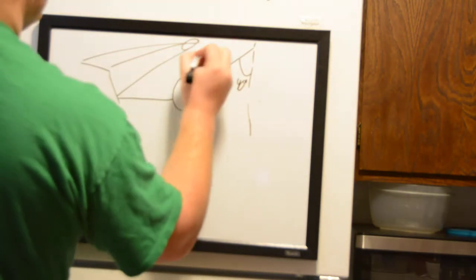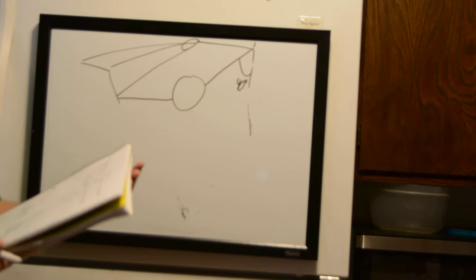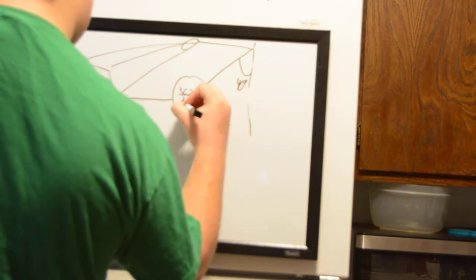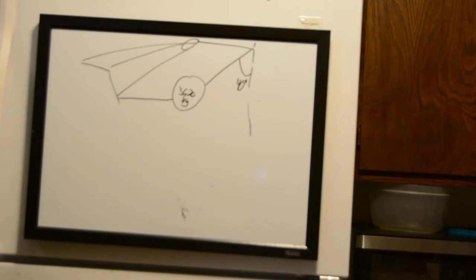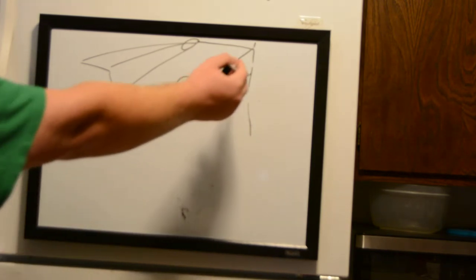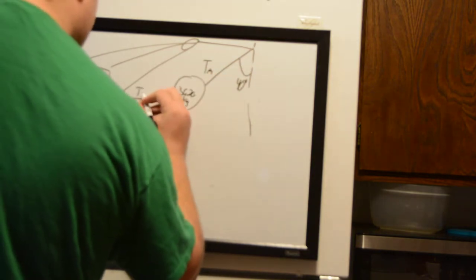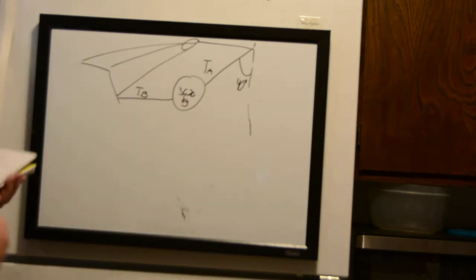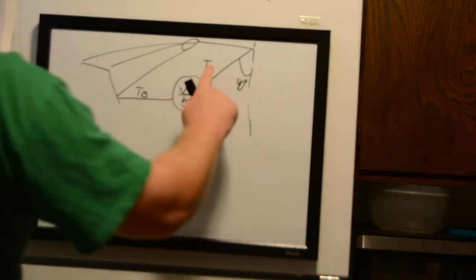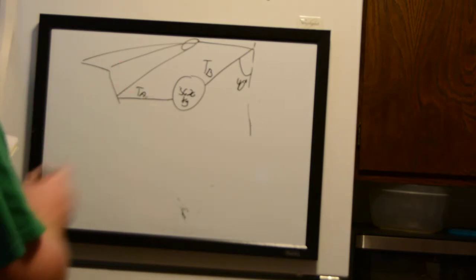The wrecking ball has a mass of 3,620 kilograms. The first question asks us to find the tension of the cable that makes the 40-degree angle with the horizontal — we'll call that Tension A — and we'll call the tension of our second cable Tension B.